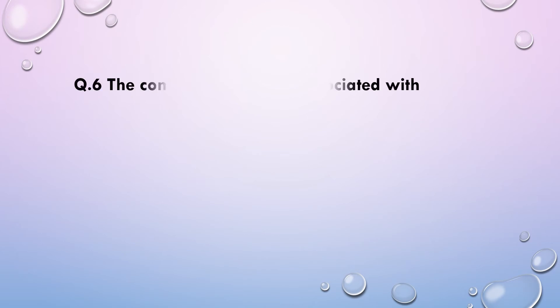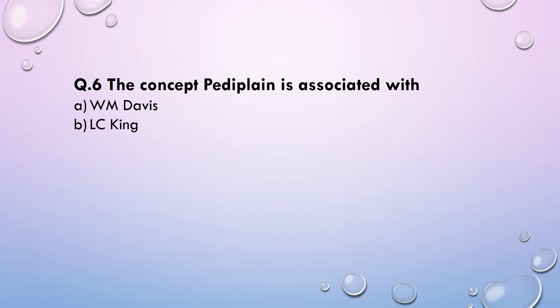Next: The concept of PD plane is associated with — (a) William Morris Davis, (b) L.C. King, (c) Walther Penck, or (d) Crickmay. The answer will be L.C. King. In the previous question we saw that the pan plane concept was propounded by Crickmay, the slope replacement concept by Penck, and here the PD plane concept was propounded by King. Davis propounded the slope declining theory and the peneplain theory.